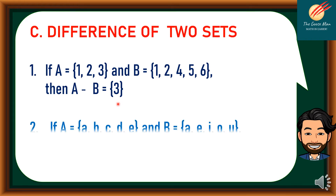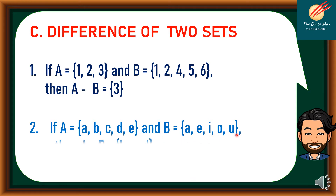On the other hand, if A is equal to {A, B, C, D, E} and B is equal to {A, E, I, O, U}. For A minus B — what are the elements in A but not in B? We have B, C, and D.